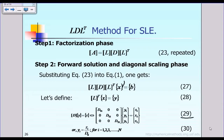To refresh your memory, we are trying to solve the system of linear equations that can be expressed in matrix notation as Ax equal to B. If the matrix A is symmetrical but not positive definite, then according to my previous lecture, we can factorize the matrix A into the form of LDL transpose, as shown in equation 23.